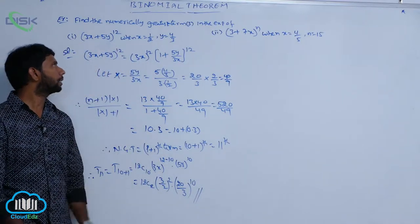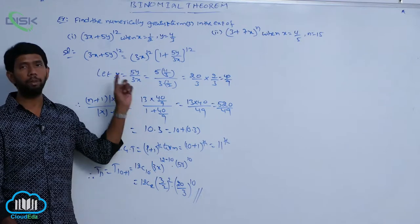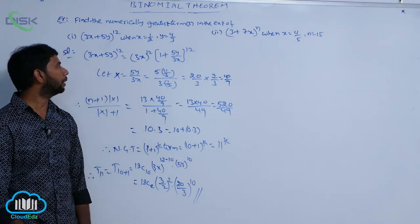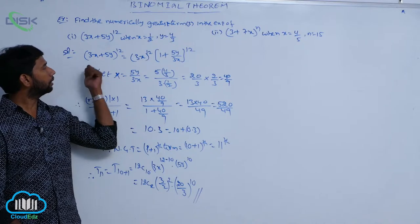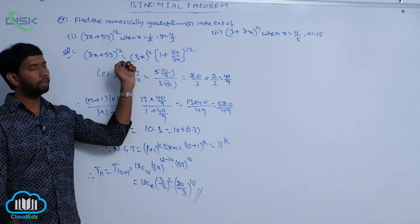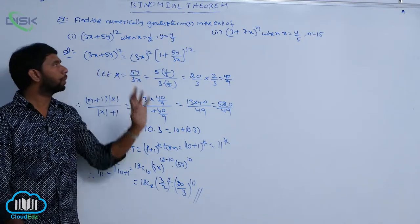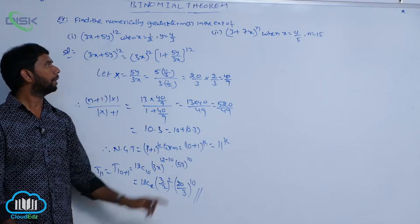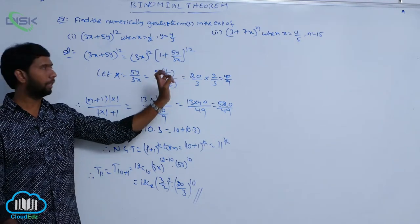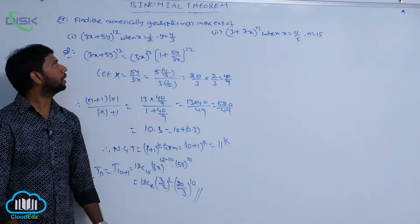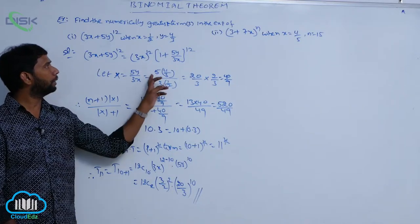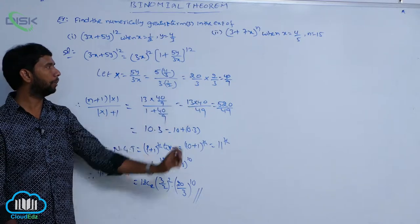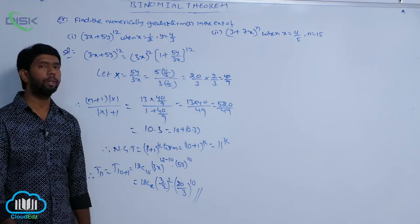For the numerically greatest term, every expansion is of the form (1 + x)^n or (1 − x)^n. For (3x + 5y)^12, take 3x as common: (3x)^12 × (1 + 5y/3x)^12. Capital X = 5y/3x. Substituting y = 4/3 and x = 1/2: X = (5 × 4/3) / (3 × 1/2) = (20/3) ÷ (3/2) = 40/9.